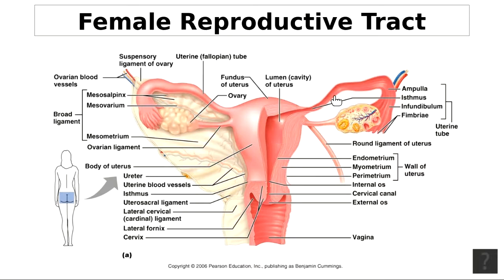The cilia beat to help move the egg toward the uterus. It takes about a three-day time frame to travel from where the egg was collected to the uterus. This duct is also called the uterine tube or oviduct.